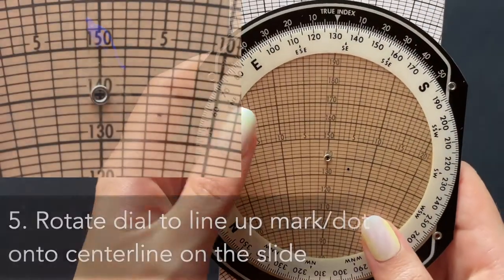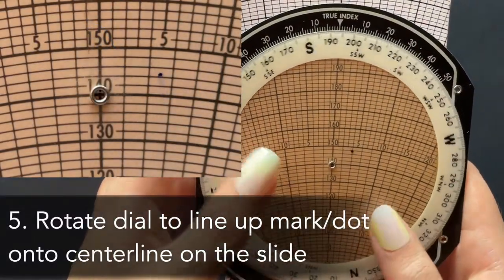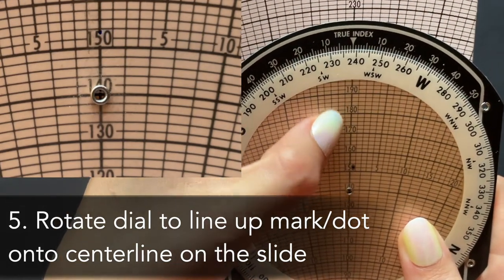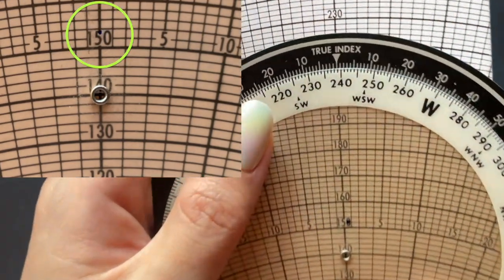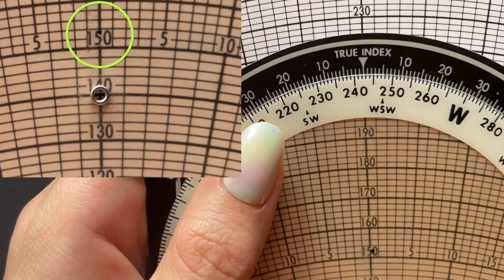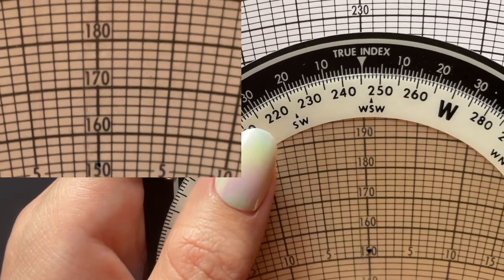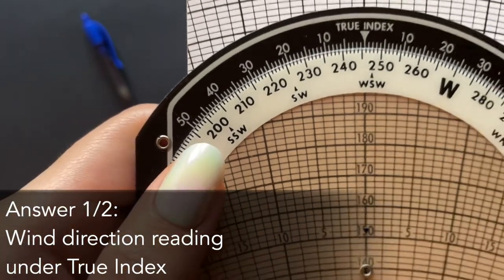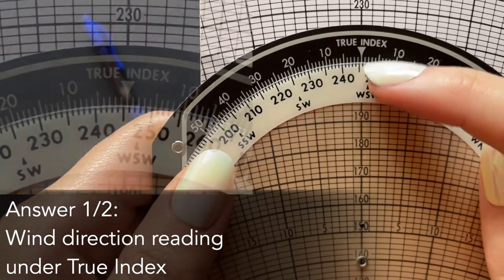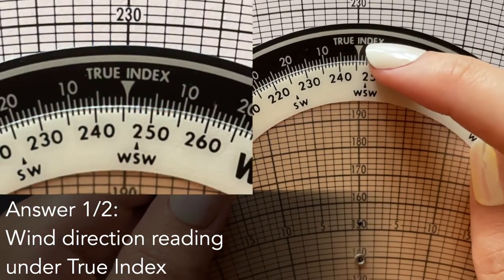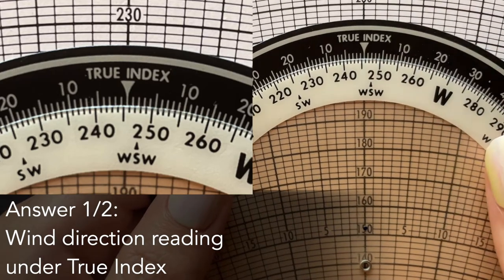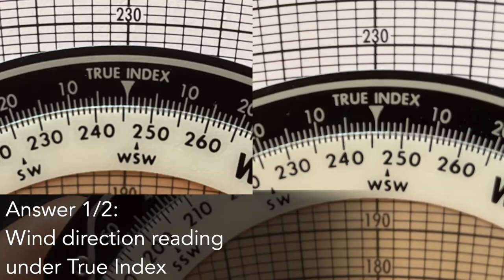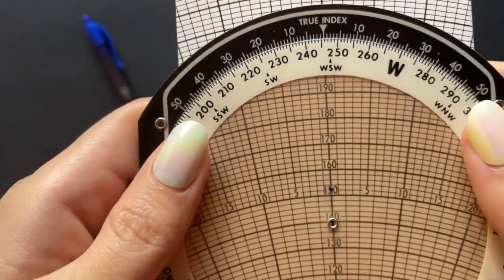Now all we have to do is rotate the dial until our marked dot lines up perfectly on the center line, which also happens to align with the true index up at the top. This is where we will read our answers to the question. For our wind direction in the answer, we will read the number lined up under the true index after that rotation we had just made. For me, it looks like I got around 246 degrees.